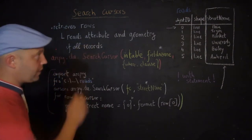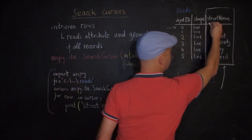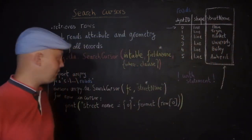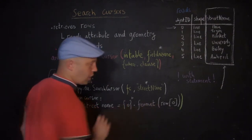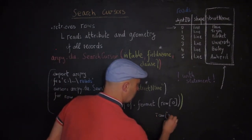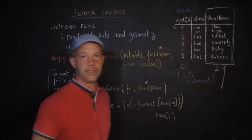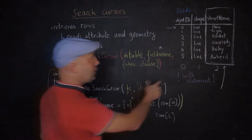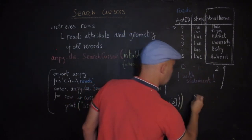To print each street name, use a for loop: for row in cursor, then print using row[0]. You may wonder why row[0] and not row[2] — because the cursor only takes into account that very last column I specified, creating a new single-column cursor. So row[0] is the first element of that cursor. Remember, we start counting at zero in Python.